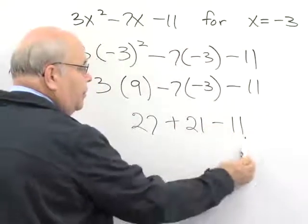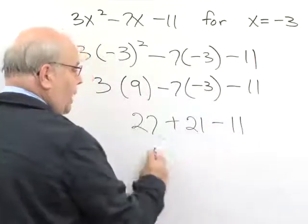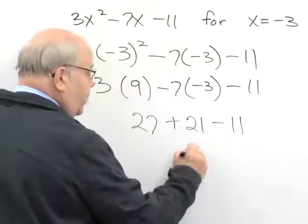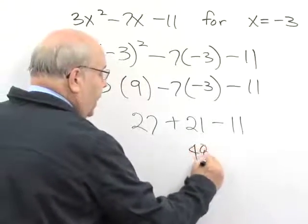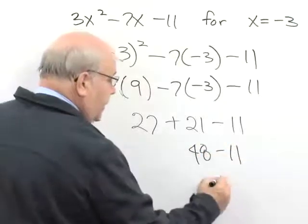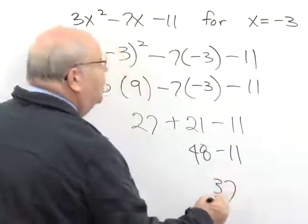to go from left to right doing the calculation. 27 plus 21 is 48, 48 minus 11 is 37. So,